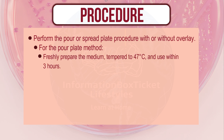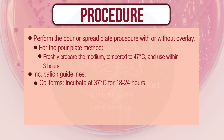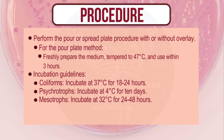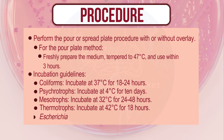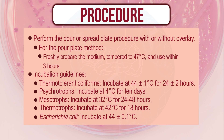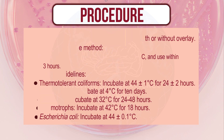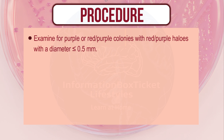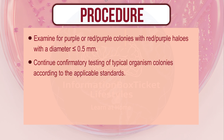Procedure: Perform the pour or spread plate procedure with or without overlay. For the pour plate method, freshly prepare the medium, tempered to 47°C, and use within 3 hours. Incubation guidelines — Coliforms: 37°C for 18–24 hours; Psychrotrophs: 4°C for 10 days; Mesotrophs: 32°C for 24–48 hours; Thermotrophs: 42°C for 18 hours; E. coli: 44 ± 0.1°C; Thermotolerant coliforms: 44 ± 1°C for 24–48 hours. Examine for purple or red-purple colonies with halos ≥ 0.5 mm, and continue confirmatory testing according to applicable standards.